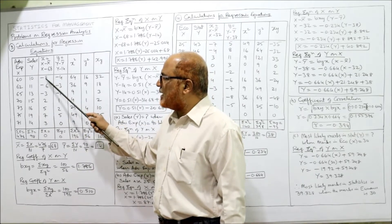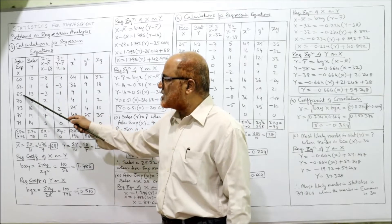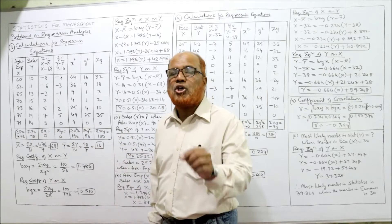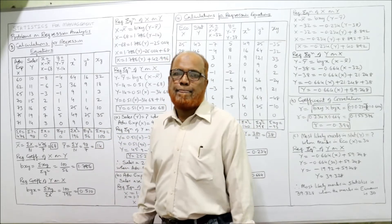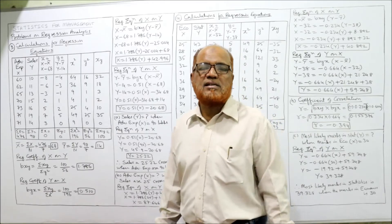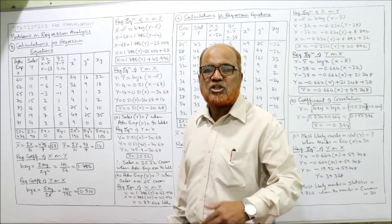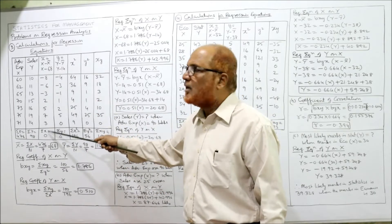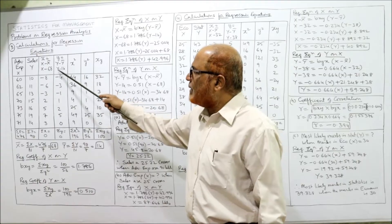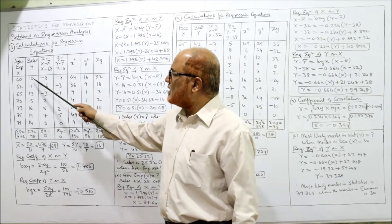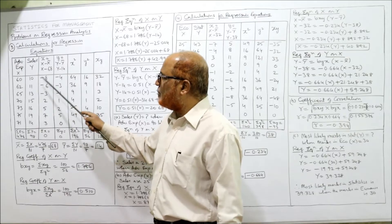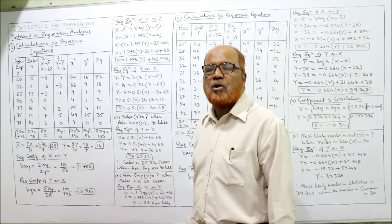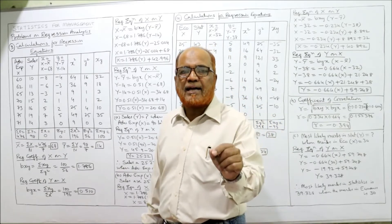So: 60 minus 68 equals minus 8; 62 minus 68 equals minus 6; 65 minus 68 equals minus 3, and so on. The summation of small x must equal 0 — if not, a calculation mistake has been made, so use this as a check before proceeding. Similarly, small y equals Y minus Y bar where Y bar is 14: 10 minus 14 equals minus 4; 11 minus 14 equals minus 3; 13 minus 14 equals minus 1. The total summation y must also equal 0.